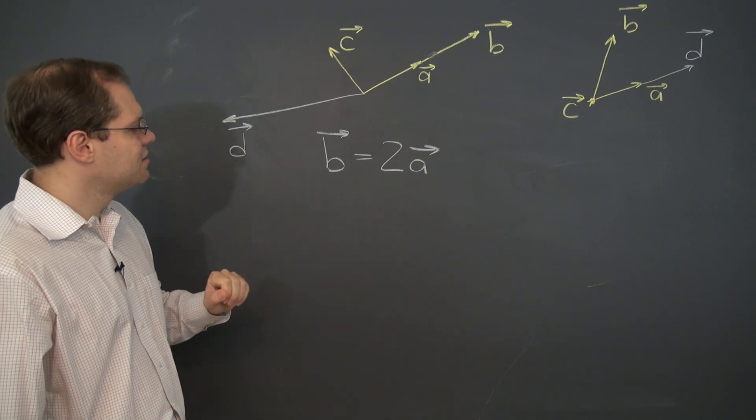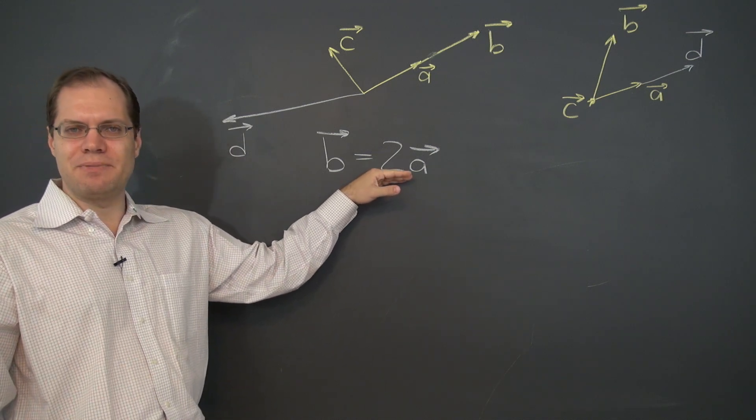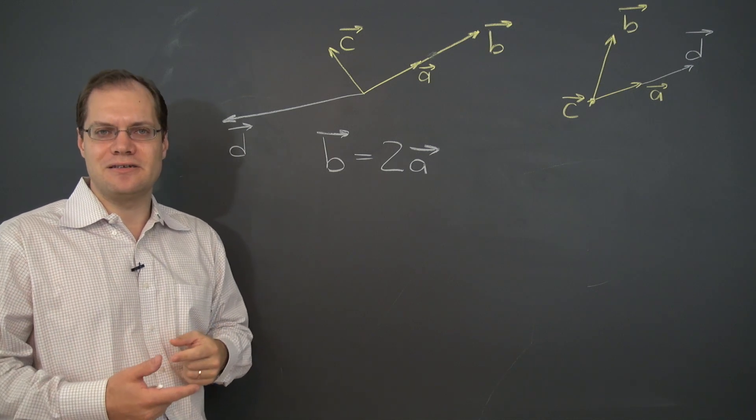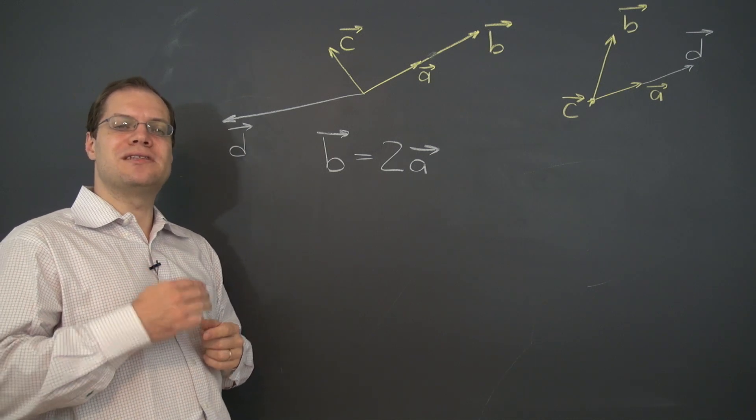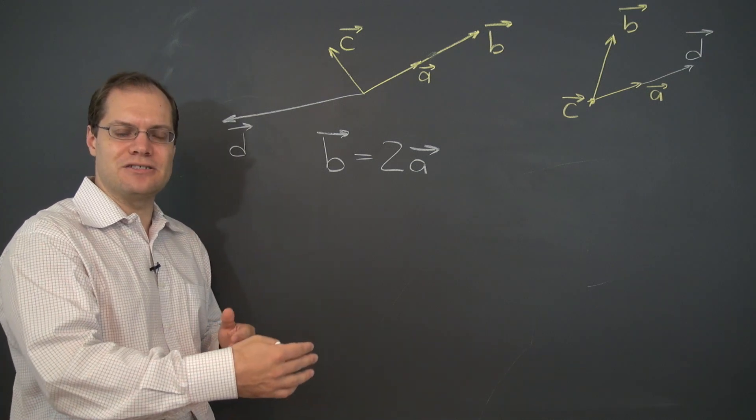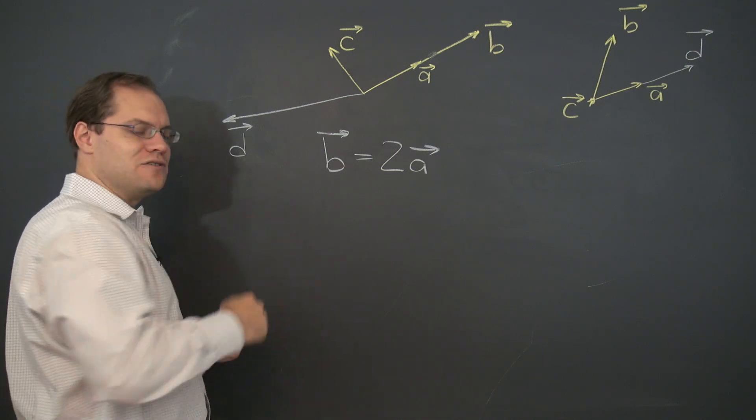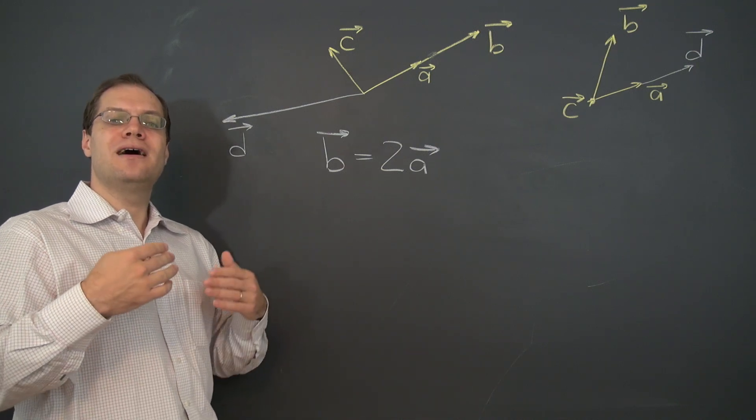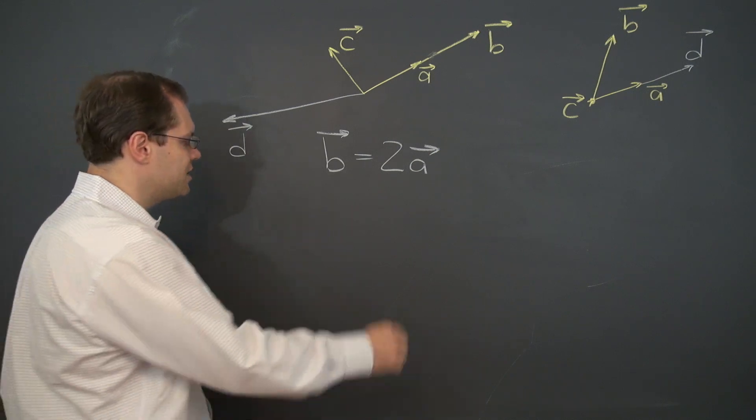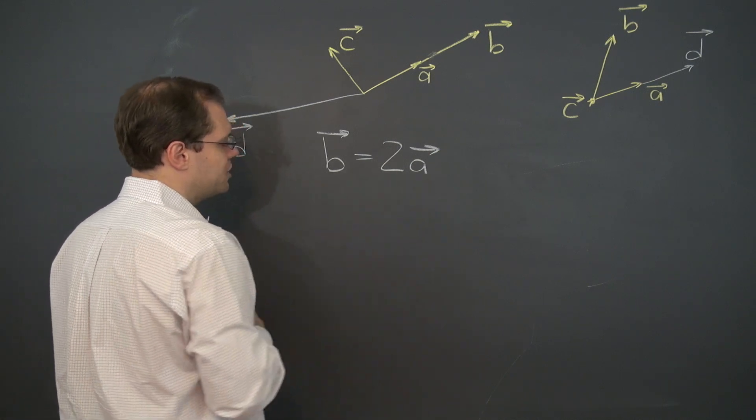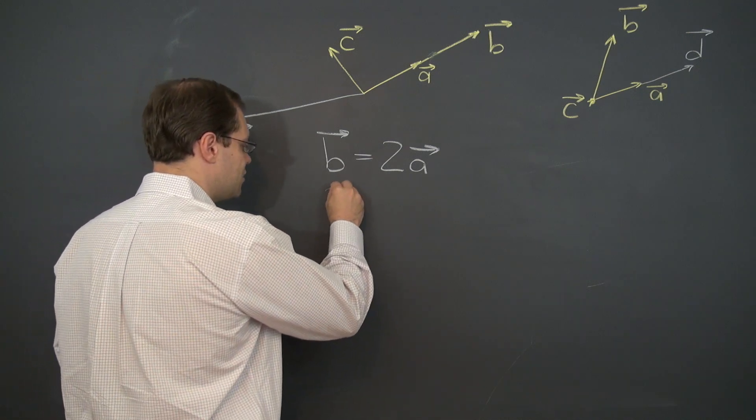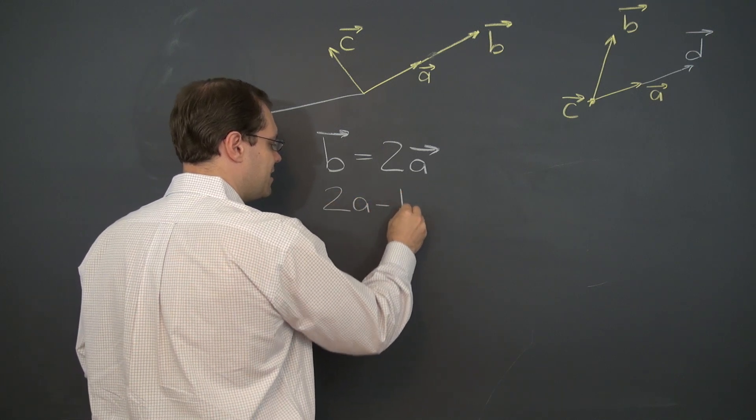So now let's convert this form of linear dependence to the non-trivial linear combination that equals zero because that's the key to decomposition. Because it is by adding that linear combination to a decomposition of d that we'll be obtaining equivalent linear combinations that also yield d. So that linear combination is, we can write it in several different ways, infinitely many different ways in fact,